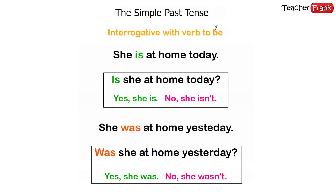Interrogative with the verb "to be". Here's another phrase in the present: "She is at home today." To make a question, you only invert — you don't use "do" in this case, because we are talking about the verb "to be". "She is" → "Is she". So the question is: "Is she at home today?" — "Yes, she is" or "No, she isn't."